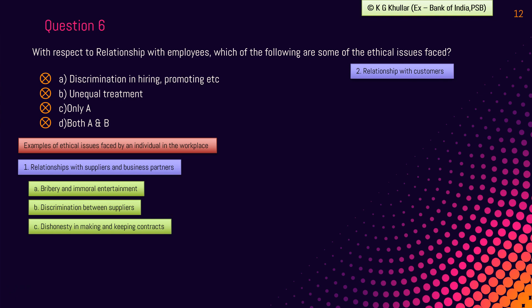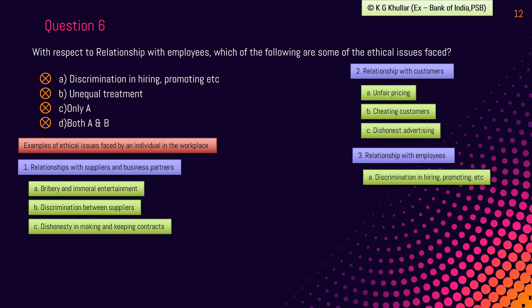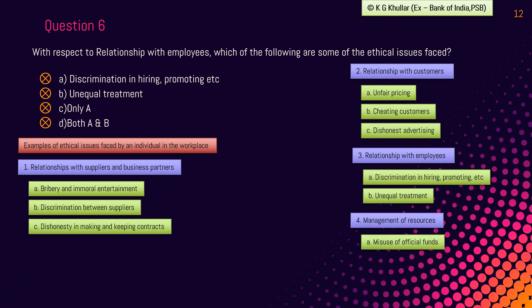Under relationship with customers, ethical issues include unfair practices, cheating customers, and dishonest advertising. Under relationship with employees, the ethical issues are discrimination in hiring, promotion, etc., and unequal treatment. Under management of resources, the ethical issues include misuse of official funds and tax evasion. The correct answer for this question is option D.